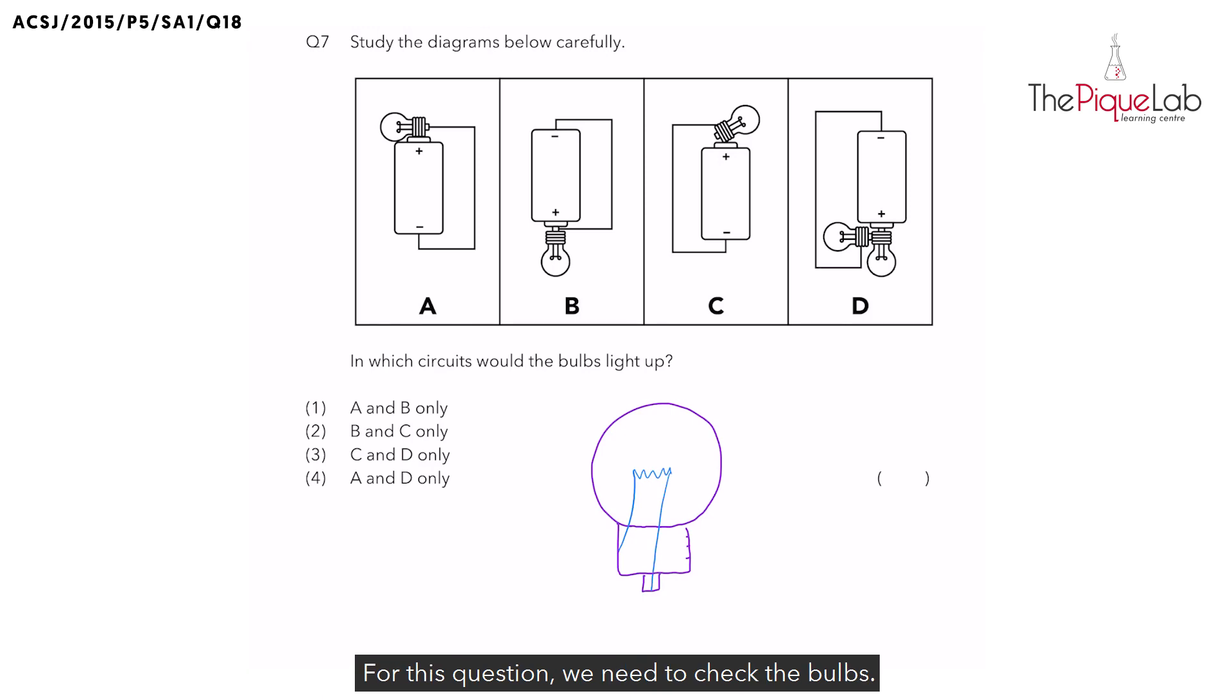For this question, we need to check the bulbs. I've already drawn a giant bulb with the inner parts visible so that you can see more clearly. Two points must be in contact with the circuit: the metal casing of the light bulb and the metal tip of the light bulb. This will allow electricity to flow through the filament, causing the bulb to light up.